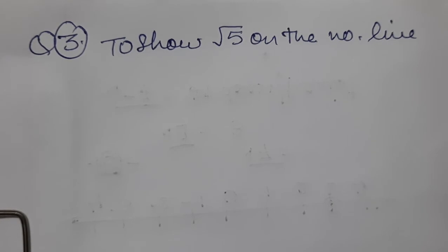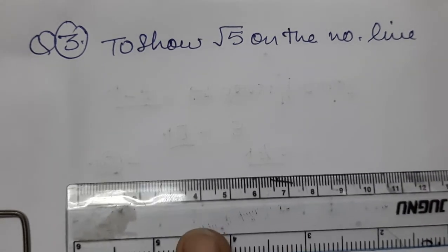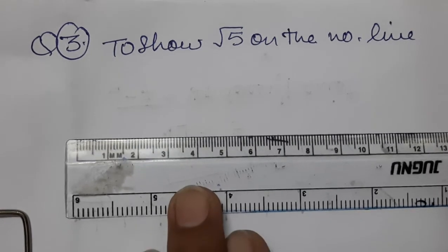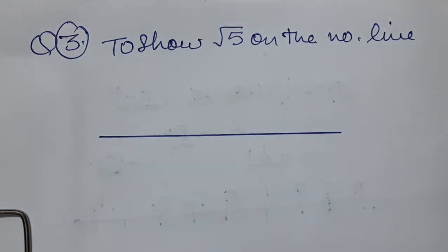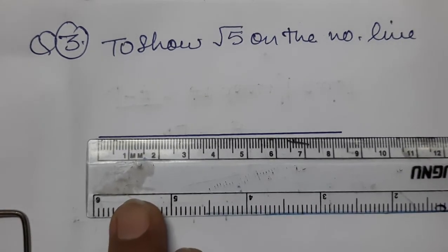Next, question number three: show √5 on the number line. So far we have represented √2 and √3 on the number line. Now let's do √5. First, draw a number line and mark units of 2 cm each, marking 0, 1, 2, 3, 4.